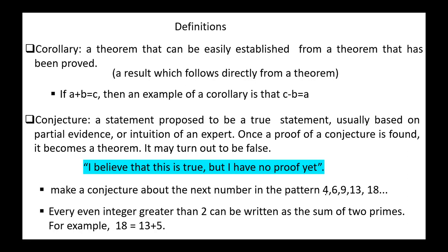The difference between the first two items is 2. The difference between the next two items is 3. The next difference is 4. The next difference is 5. So we can predict that the difference between the next two items is 6. So 18 plus 6 equals 24, and the next item 24 plus 7 equals 31, etc.